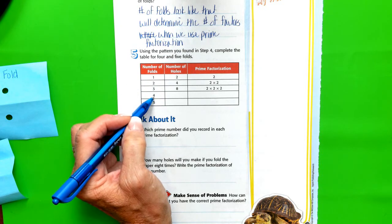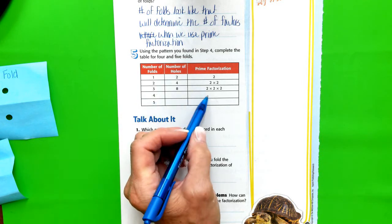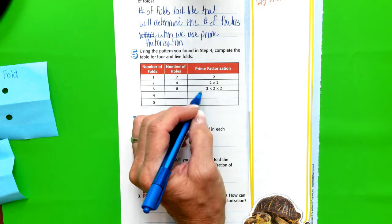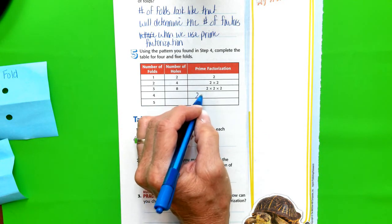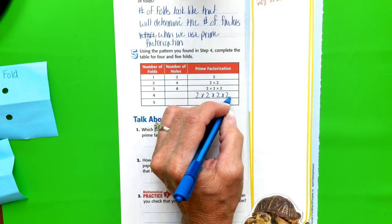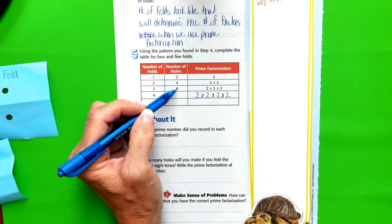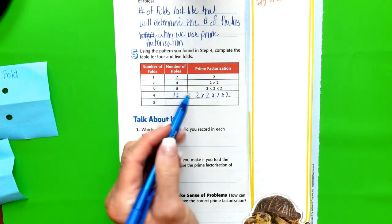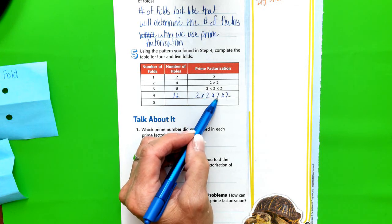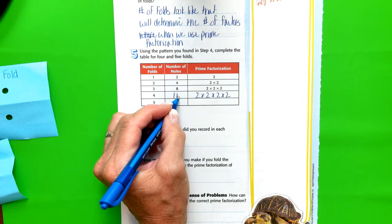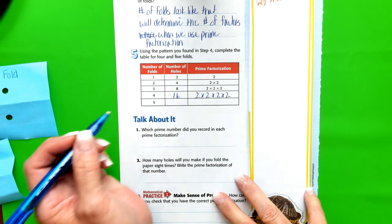So if we have the number of folds is four, then how many digits are we going to have over here in prime factorization? And if you said four, I think you're correct. Two times two times two times two. And each of these were doubling, so if eight were to double, that would be 16. Two times two is four, times two is eight, eight times two gets us to 16. Holy moly, I think we're onto something.